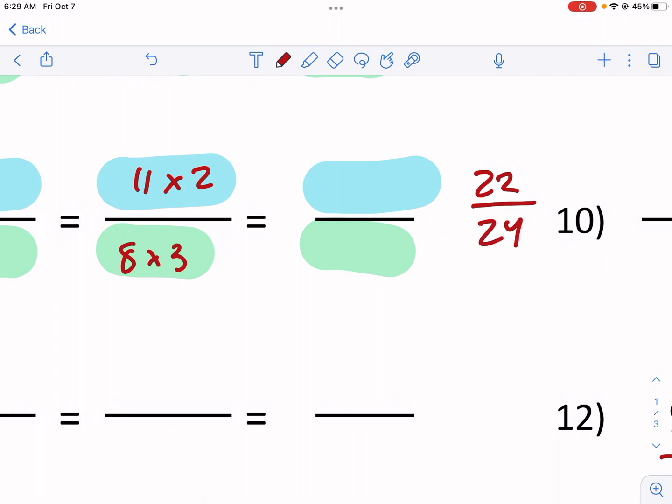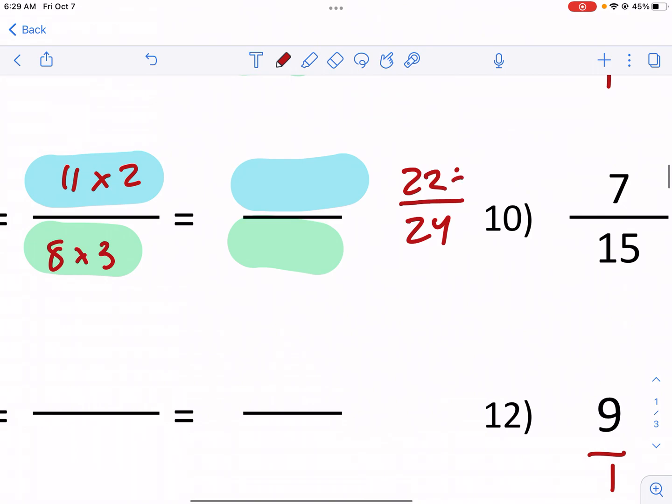So we can divide both the top and bottom by two, and we would get 11 over 12. Now let's see how this applies to crossing it out, canceling.